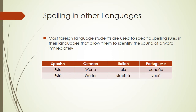Most foreign language students are used to specific spelling rules in their languages that allow them to identify the sound of a word immediately. Let's see how different rules are applied in European languages. For example, in Spanish the words 'esta' and 'ésta' — the accent is indicated by the tilde on the A, where in the other word there is no indication.